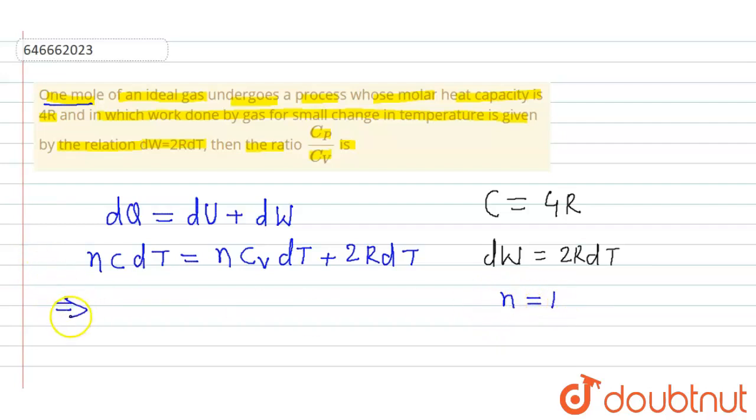So I can write C dt equal to Cv dt plus 2R dt. Now dt will cancel.